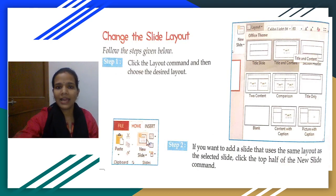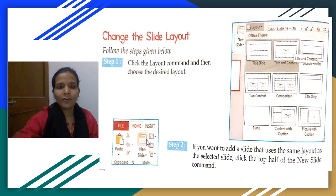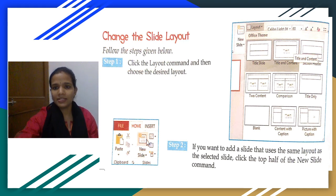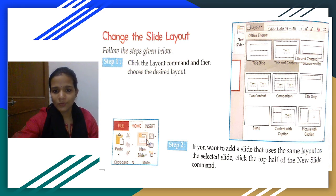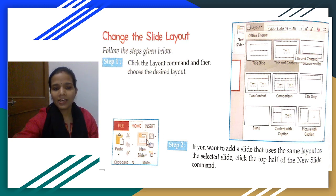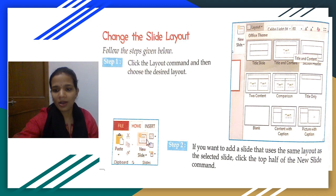To change the slide layout, follow these steps. Step 1: Click the Layout command and choose the desired layout. You can see options like Office Theme, Title Slide, and Title and Content. Step 2: If you want to use the same layout as the previous slide again, click the top half of the New Slide command.